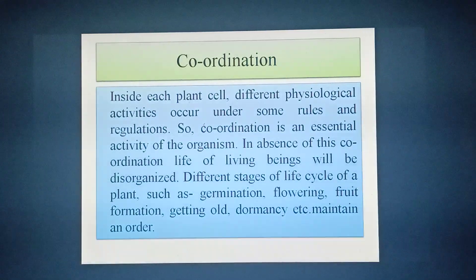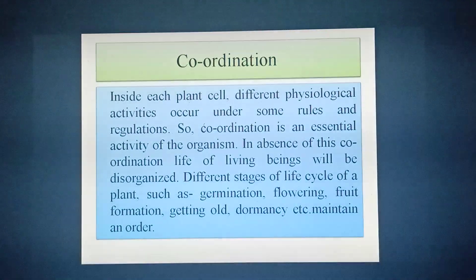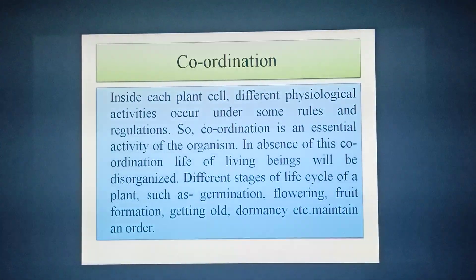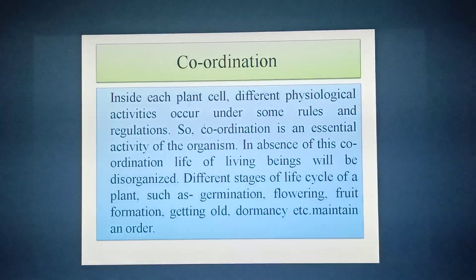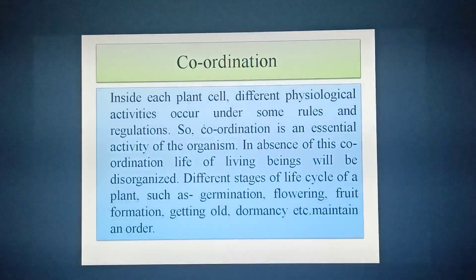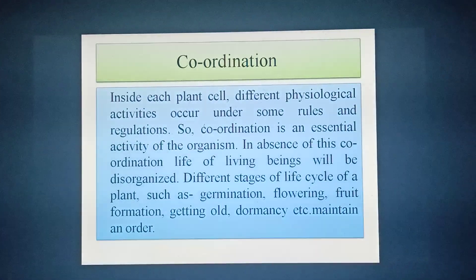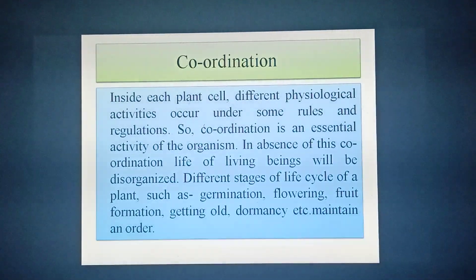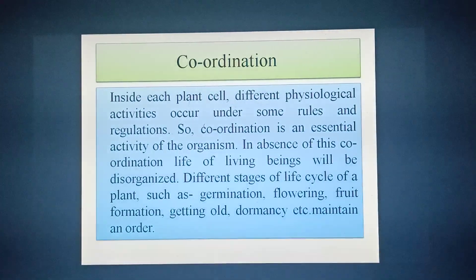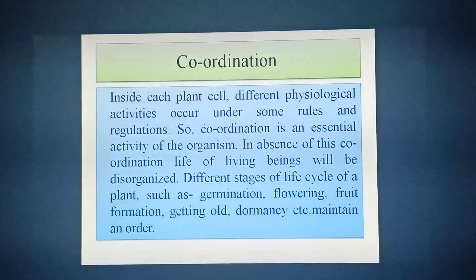What are the different stages of the life cycle of plants? The different stages of the life cycle of plants are, for example, germination, growth, flowering, fruit formation, getting old, dormancy, etc. These different stages of the life cycle of plant are maintained under some order.